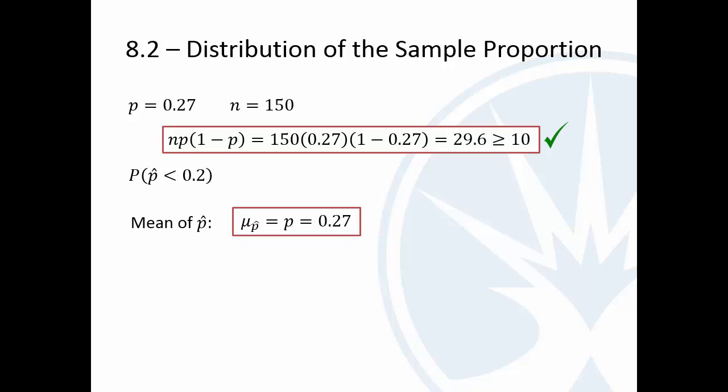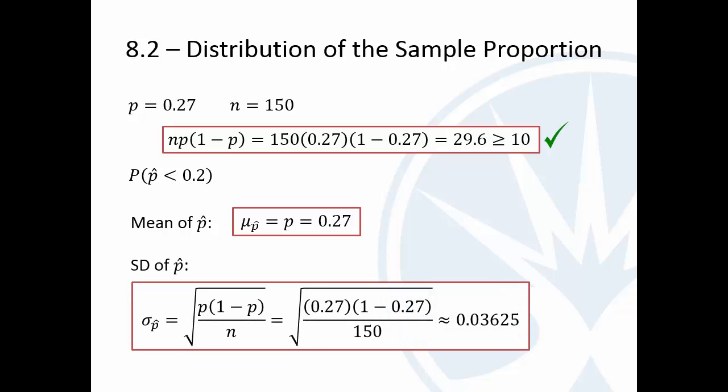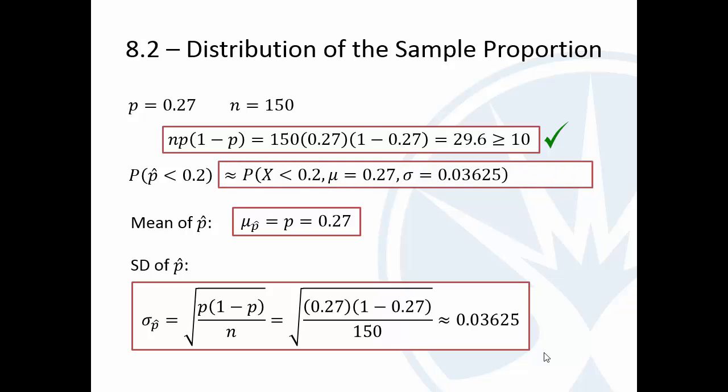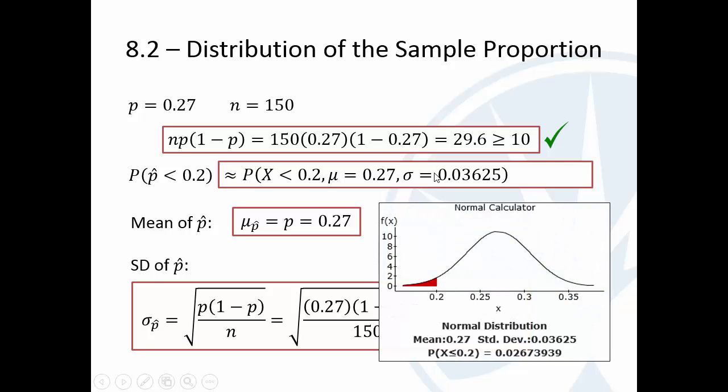All right, so we need the distribution of p hat. The mean of p hat is the same as the population proportion. And then the standard deviation using that formula is 0.03625, four digits. So if we look at this probability, we're going to find the probability and treat it like a normal probability with this mean and this standard deviation. I took a screenshot here of the normal calculator, mean 0.27, standard deviation 0.03625. And so we get about 0.0267.